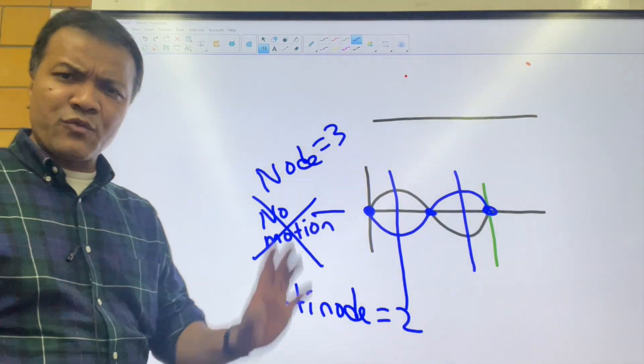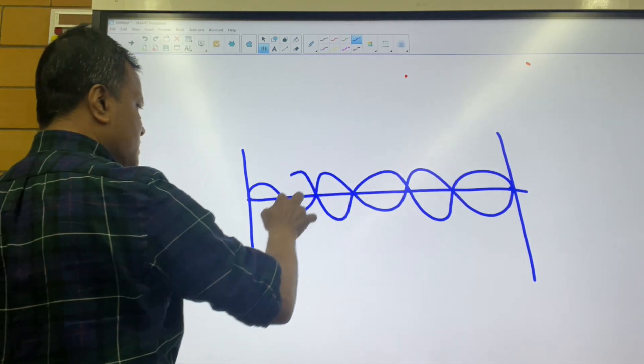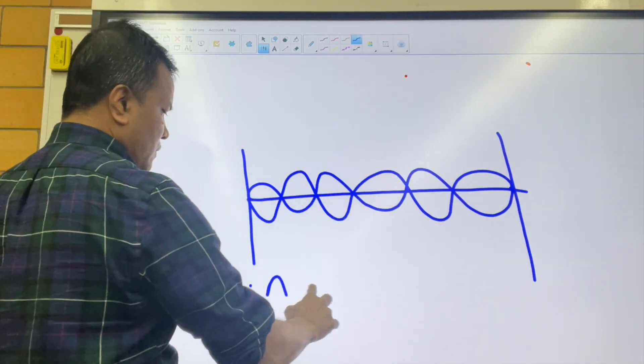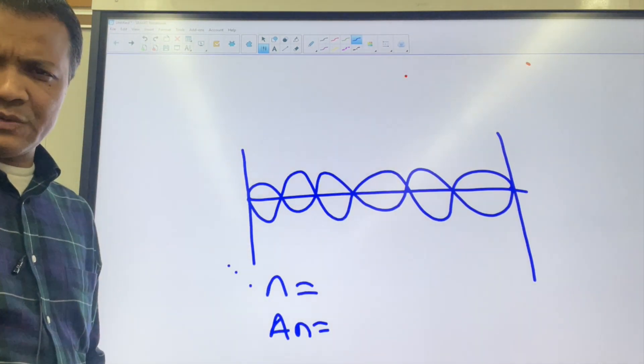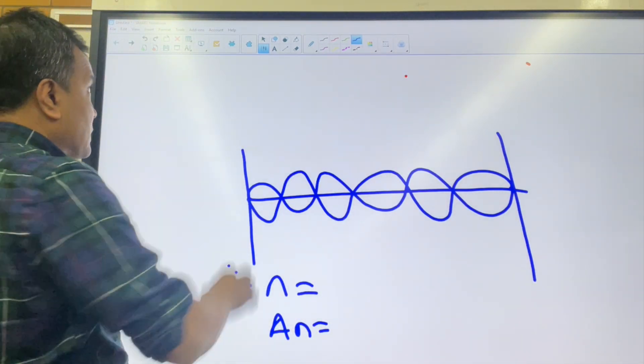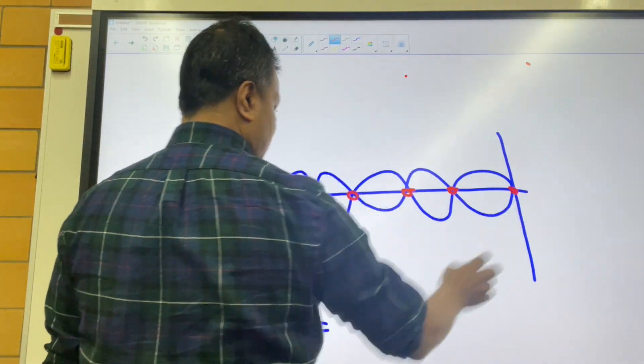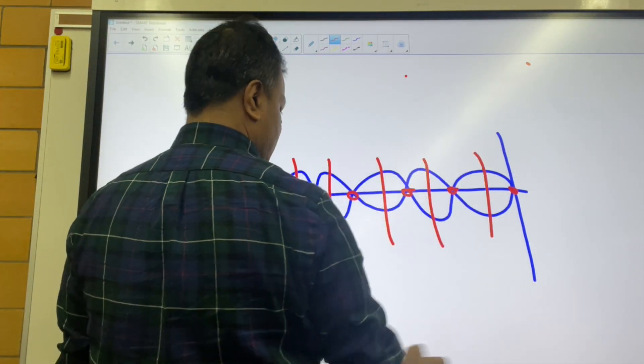Now, let me give you a quiz before we move on to harmonics. Pause the video and count the nodes and anti-nodes. One, two, three, four, five, six, seven. Seven nodes. One, two, three, four, five, six anti-nodes.